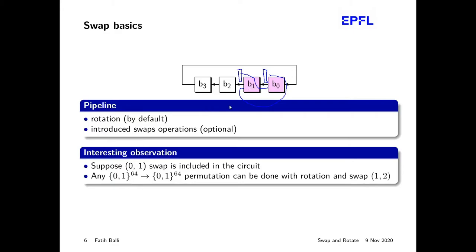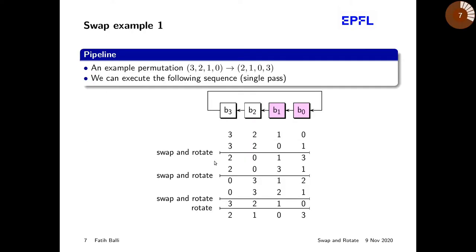That requires only two MUXs. The interesting theoretical observation is that once you introduce a swap such as 0-1, combined with the existing rotation operation, you can execute any permutation given a sufficient number of clock cycles — you can derive a sequence of operations which eventually does whatever permutation you want.